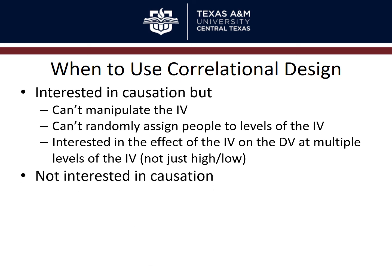You might also use correlational designs when you're just not interested in causation — only in prediction. For example: who will be the best job applicant, the most successful student, or the most responsible parent? When making data-based decisions, you may only care about accurately predicting the best outcome. However, relying on correlational data without understanding underlying mechanisms can lead to discrimination — for instance, using gender as the sole predictor in child custody decisions based on a statistically significant correlation, even though it doesn't apply to every individual case.